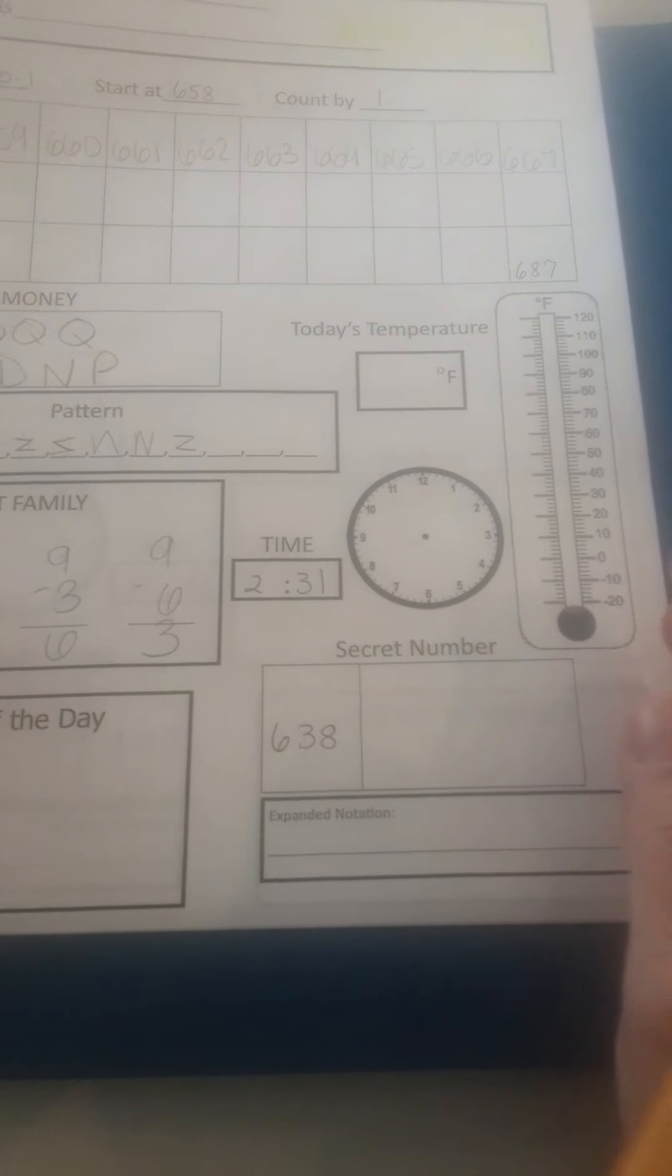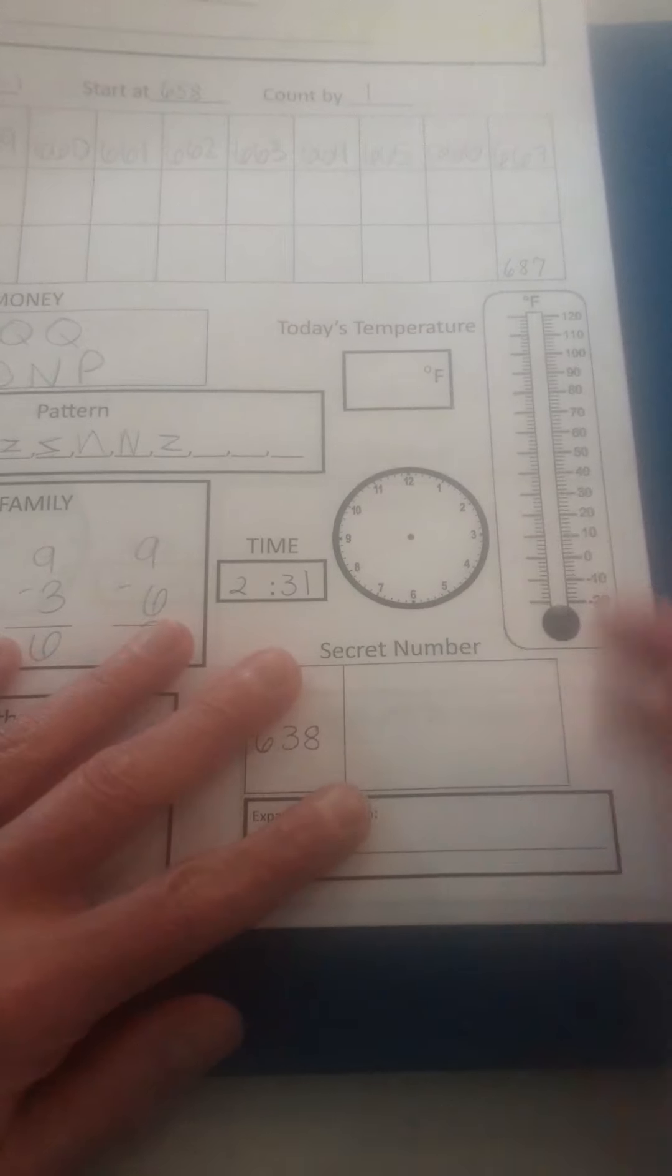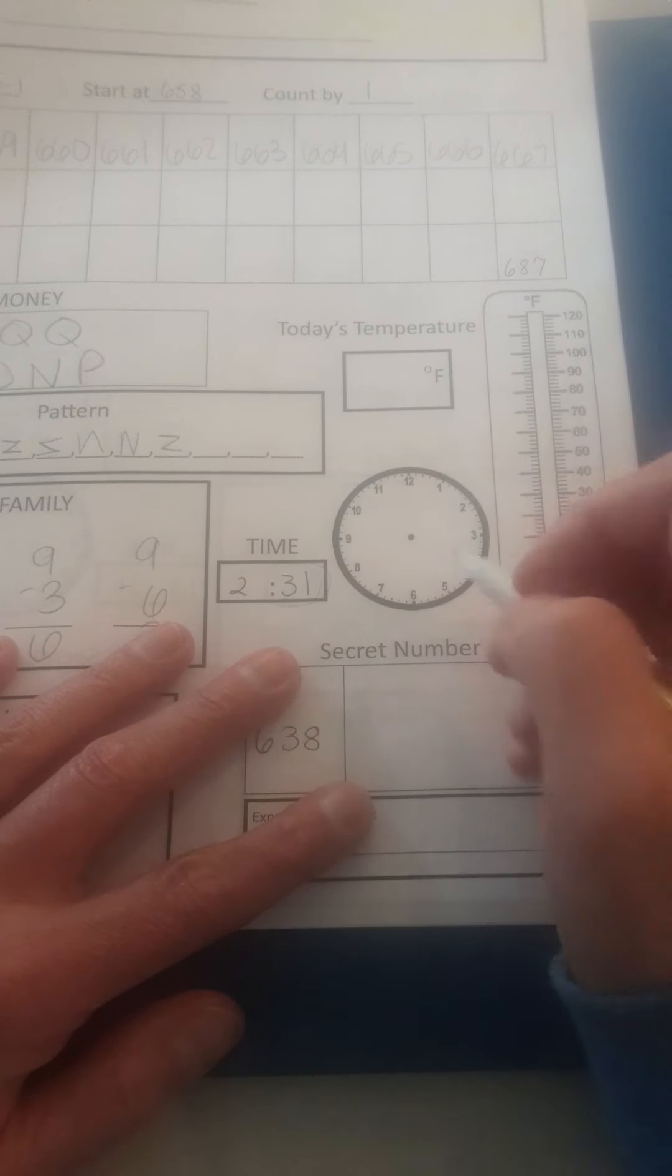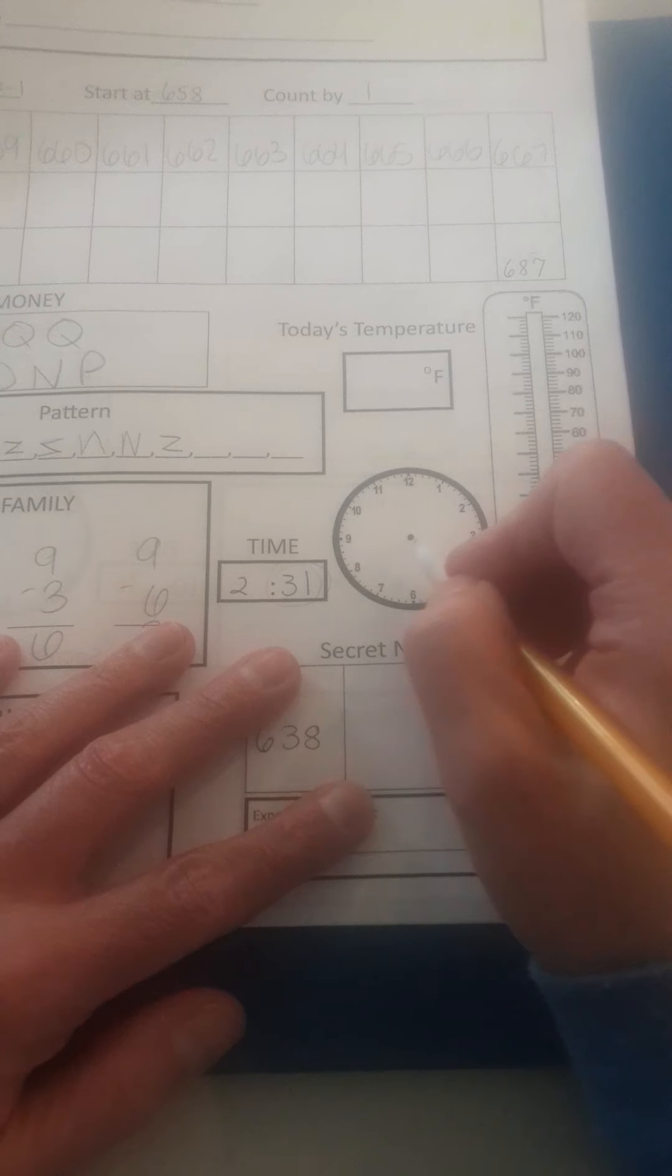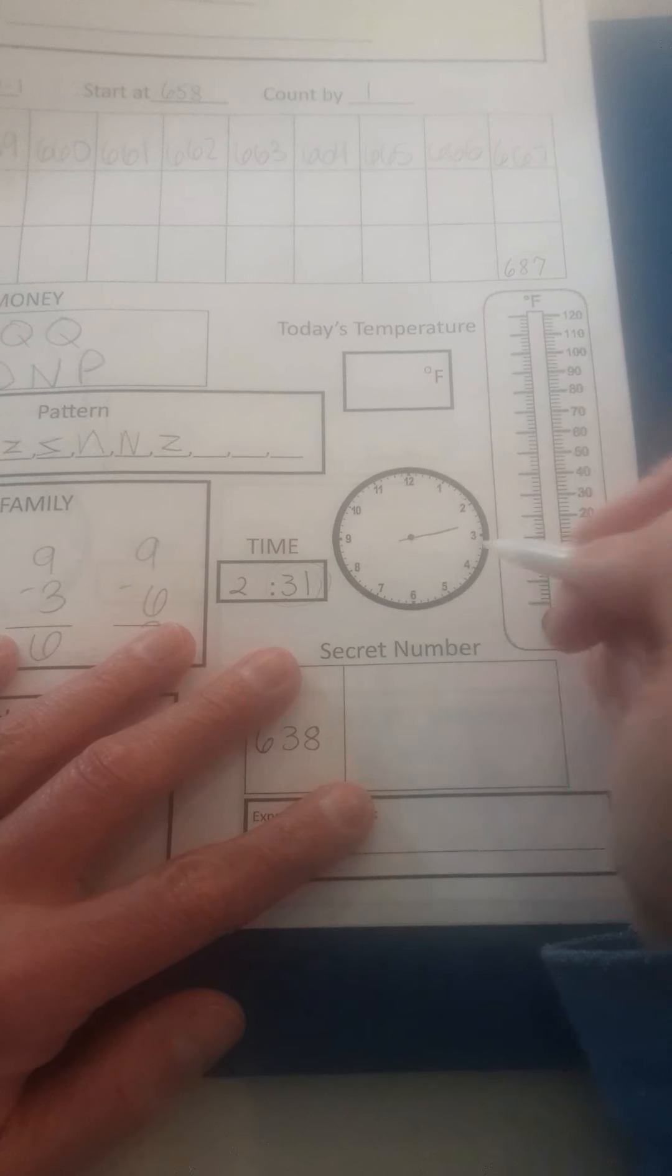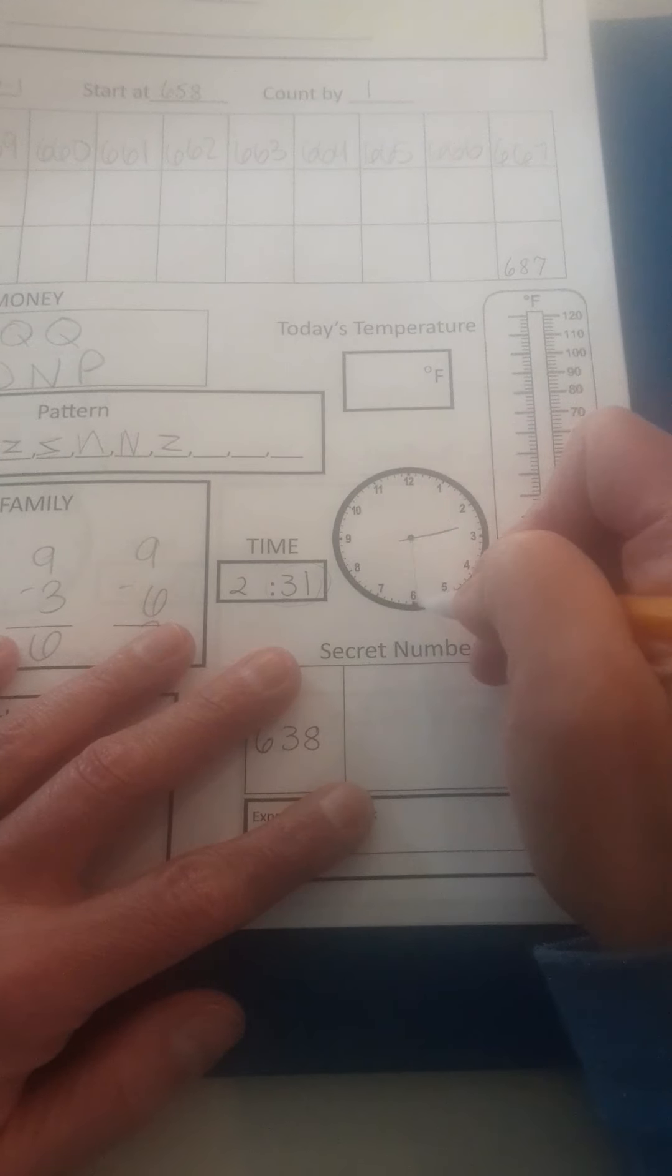The time is two thirty-one. Since I know it's after 30, I'm gonna put my hour hand in between two and three. Here is my hour hand, my short hand. Now I know the six is 30, so I just need to go over one.